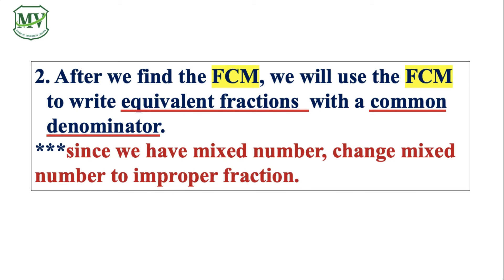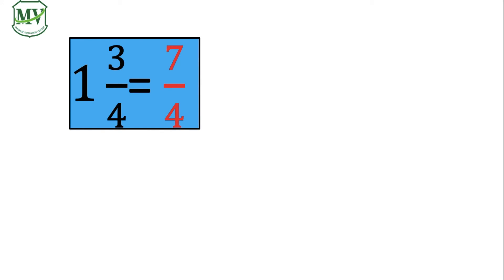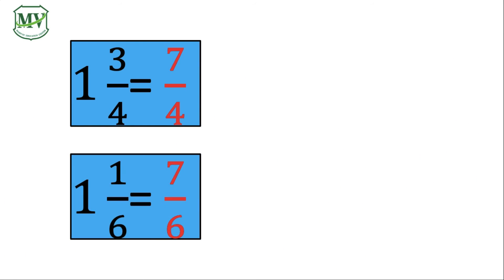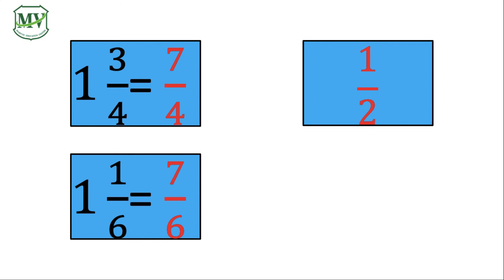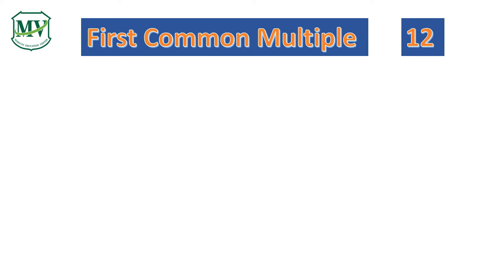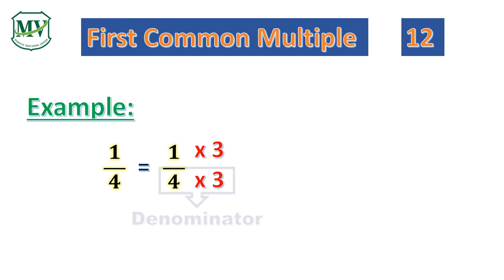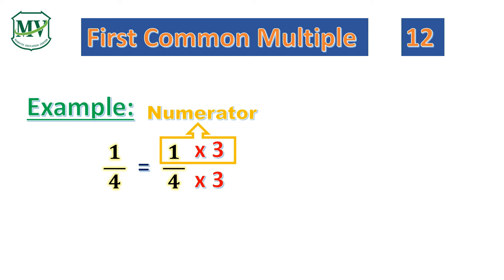Since two of the given fractions are in mixed number form, we must change them to improper fractions. 1 and 3 quarters is equal to 7 quarters. 1 and 1 sixth is equal to 7 sixths. We will retain 1 half and 2 thirds. Since our LCM is 12, we must multiply the denominators with numbers that will give us 12, and don't forget to multiply the numerator by the same number.